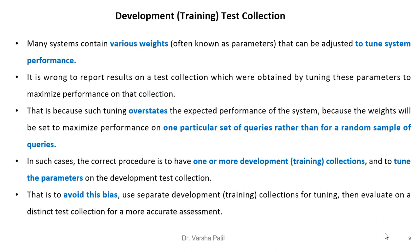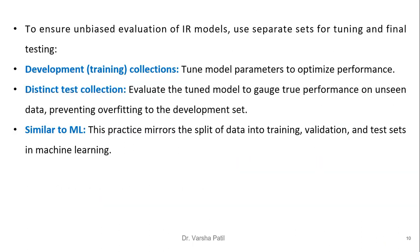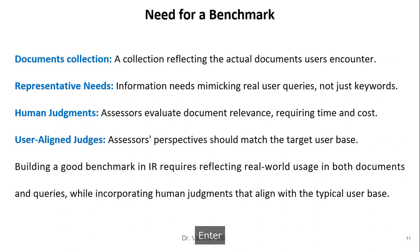To avoid this bias, use a separate training collection for tuning and then evaluate on a distinct test collection for a more accurate assessment. The training collection is used to tune model parameters and optimize performance, while the distinct test collection evaluates the tuned model to gauge true performance on unseen data, preventing overfitting to the development set. This practice mirrors the split of data into training, validation, and test sets in machine learning.